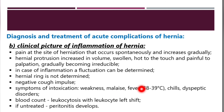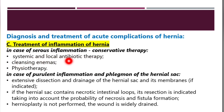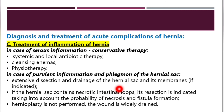Blood count shows leukocytosis with a left shift, and if untreated it can lead to peritonitis. In cases of serious inflammation, conservative therapy with systemic and local antibiotic therapy, cleansing enema, and physiotherapy is used. In cases of purulent inflammation and phlegmon of the hernia sac, extensive dissection and drainage of the hernia sac and its membranes is performed. If the hernia sac contains necrotic intestinal loops, resection is indicated; hernioplasty is not performed and the wound is widely opened and drained.